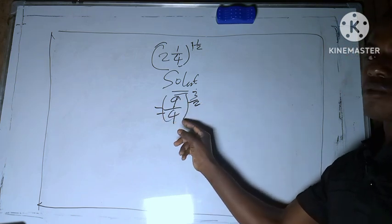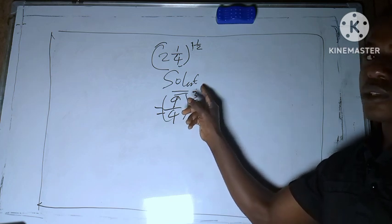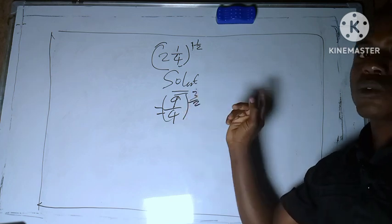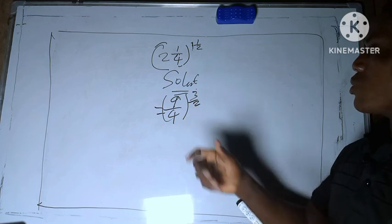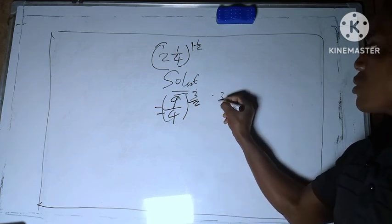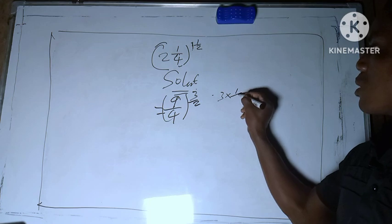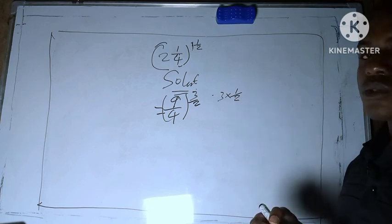So we have bracket 9 over 4 bracket close raised to power 3 over 2. You know this 3 over 2 is the same thing as 3 multiplied by 1 over 2.